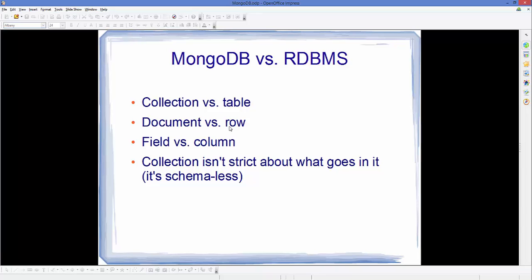So: a collection is like a table, a document is like a row, and a field is like a column. Instead of using table, row, and column terminology, we're going to use collection, document, and field. A collection isn't strict about what goes inside it like a relational database — it's schema-less. So this is a small brief introduction about MongoDB. Now let's download MongoDB on our Windows operating system.